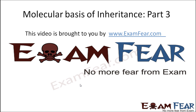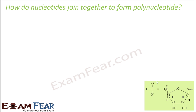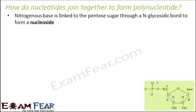Hello friends, this video on molecular basis of inheritance part 3 is brought to you by examfear.com. So the question is how do nucleotides join together to form a polynucleotide? We saw the three different components which form one nucleotide, but the question is how are these components connected to each other?